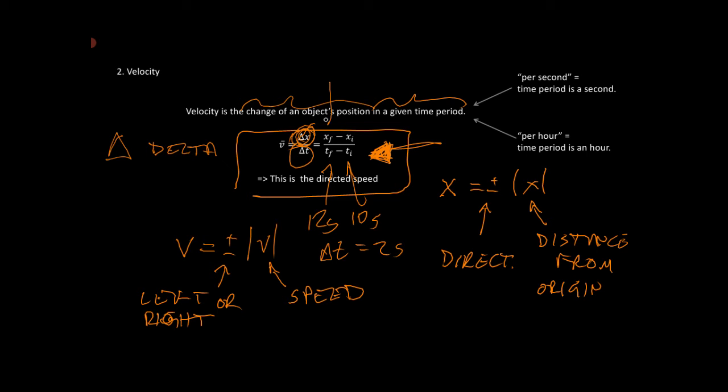F and i - so xf is the position at the end, and xi is the position at the beginning of a process. So you have those two things there. You add or subtract them. That's all that means.